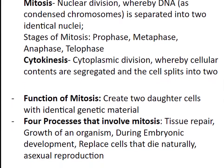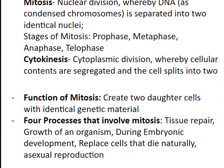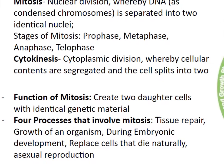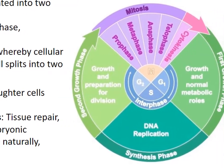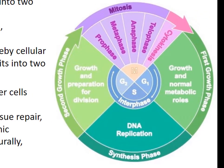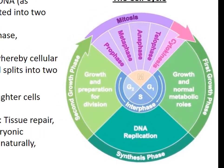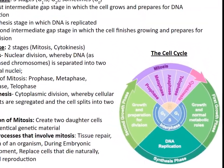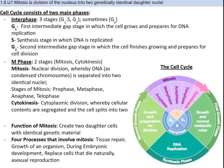Why does this happen? Our cells are constantly undergoing this process out of need — things like repairing damaged or old tissue, growth of an organism, replacing cells that die naturally during embryonic development, and asexual reproduction. You can see the cell cycle in the bottom right corner, and how much time is spent in the different stages and phases. We're going to break these down more and talk about some issues related to the cell cycle getting out of whack.